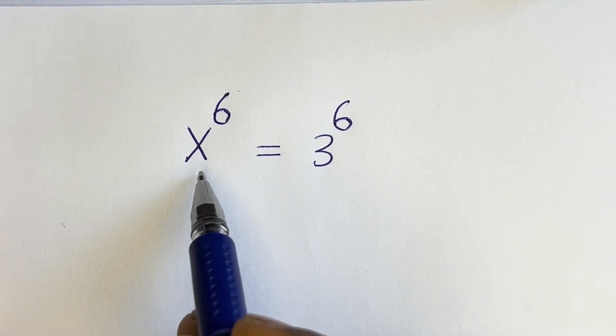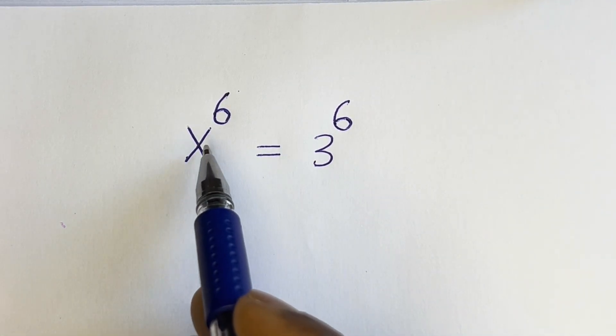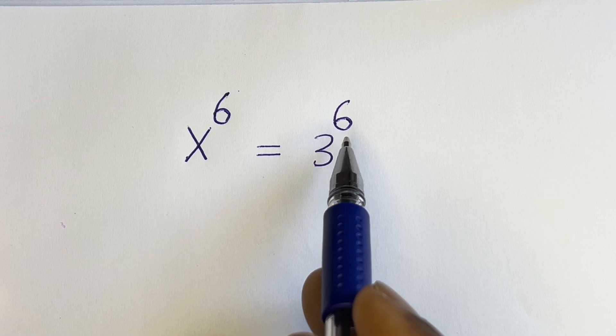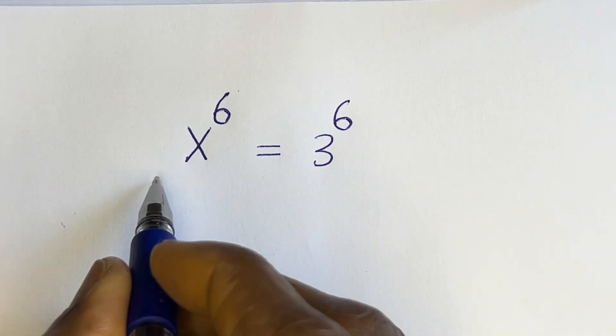Hello. How to solve for x in this equation: x to the power of 6 is equal to 3 to the power of 6. Solution.